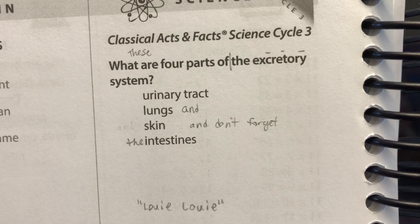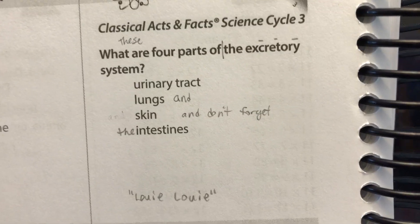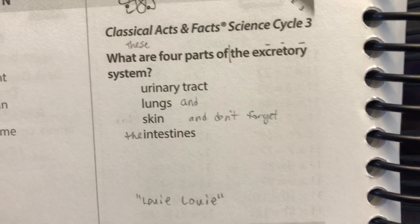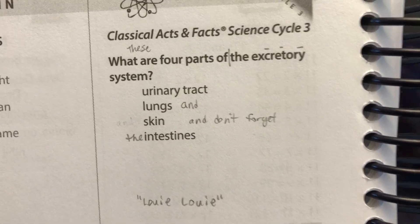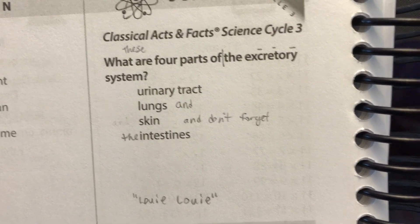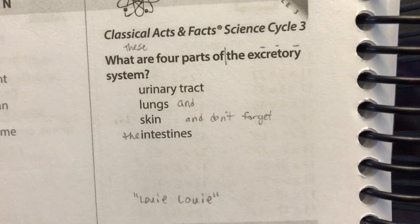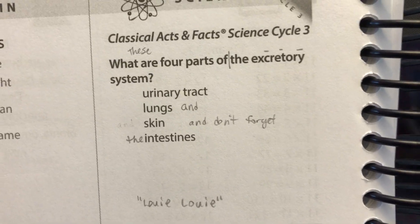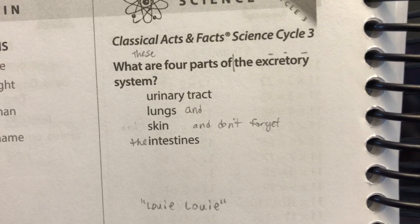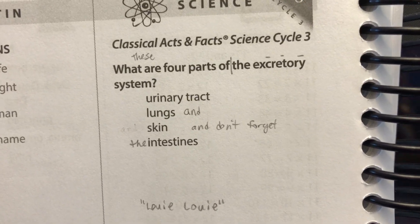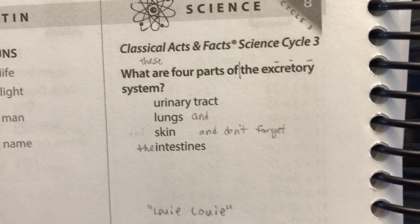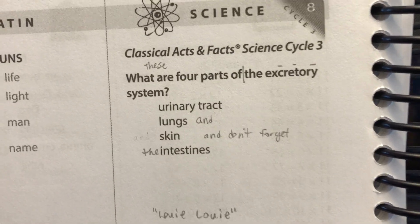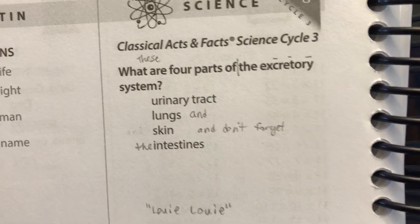Urinary tract, lungs and skin, and don't forget the intestines. These are four parts of the excretory system.